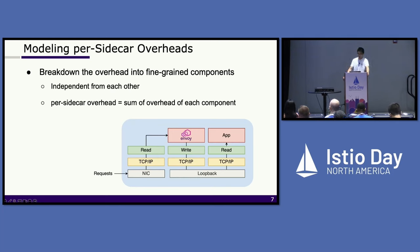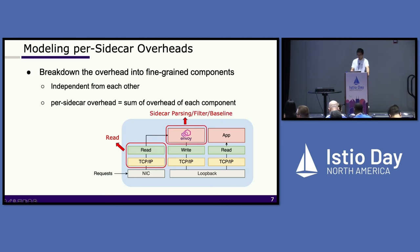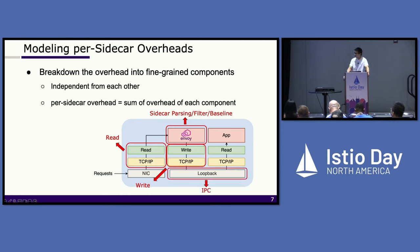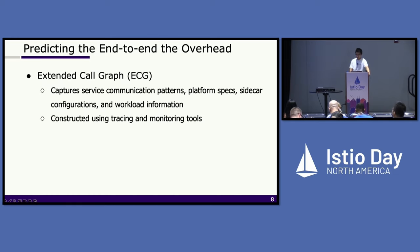Instead of using a black-box approach, we model per cycle overhead based on a decompositional model. The figure on the bottom shows the data paths of a request. We break down data paths into several finer-grained components: the read system call, and three side components that represent parsing, the filter chain processing, and the baseline processing, then the write system call, and finally the inter-process communication between Envoy and the application. The nice thing about these components is that they're independent from each other, and when you compose them together, they represent the end-to-end overhead.